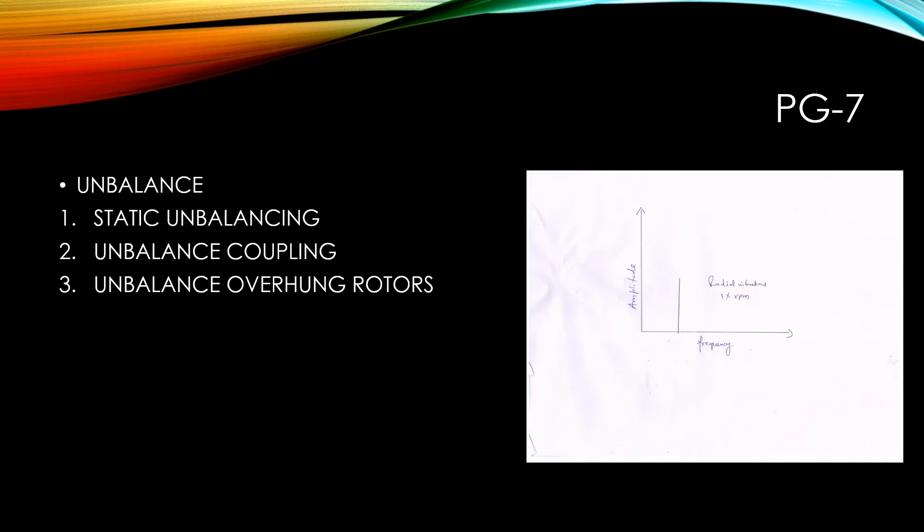Now we are going to discuss the state of unbalance. The International Standard Organization defined unbalance as that condition which exists in a rotor when vibratory force or motion is imparted towards bearing as a result of centrifugal forces. The uneven distribution of mass about a rotor's rotating centerline.